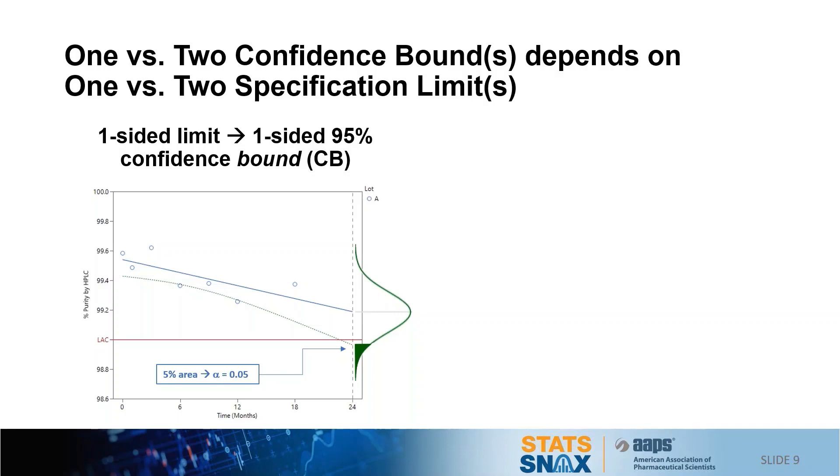And then in examples for attributes with upper and lower specification acceptance criteria, a two-sided 95% confidence interval is applied. Why?